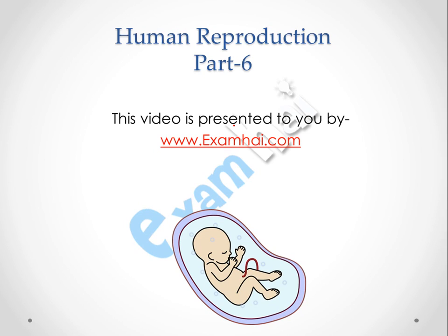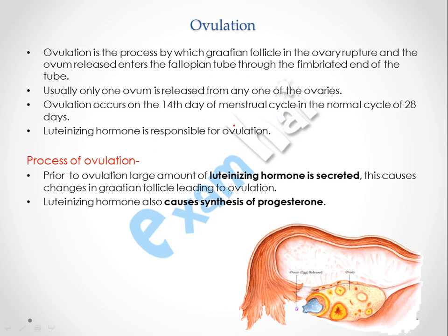Hello everyone, today we are going to discuss the topic of human reproduction. As we have discussed in our previous video about the male and female reproductive system, including various parts of the female reproductive system, the structure of the ovary, and all the accessory organs — now we are going to discuss ovulation.